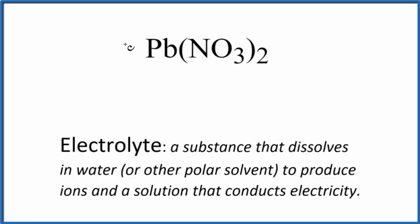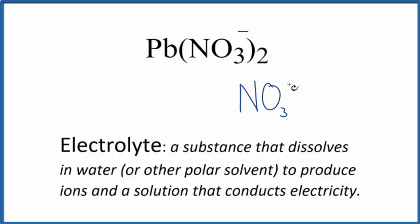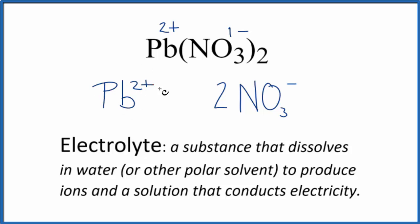So when we put this ionic compound — lead-2 nitrate — in water, it's going to break apart into its ions. We'll get the nitrate ion, NO₃⁻, which is 1-, and since there's a 2 here, we'll get 2 of those. And then for the lead, we don't know the charge since it's a transition metal, but since this is 1- and we have 2 of them, it has to be 2+. So we'll also get our lead-2 ion, Pb²⁺. These will both be dissolved in water, so we put (aq) after them.